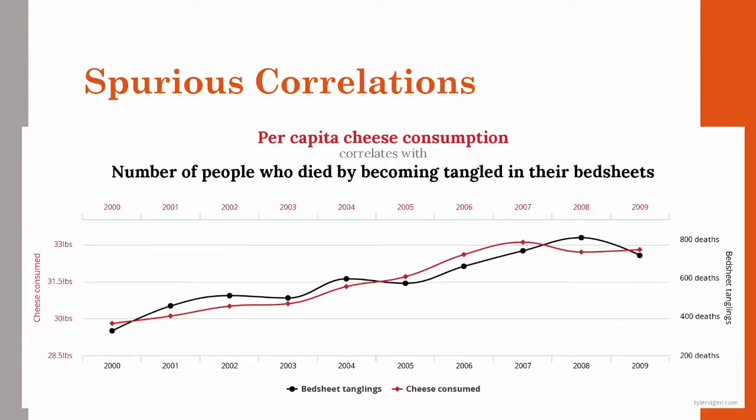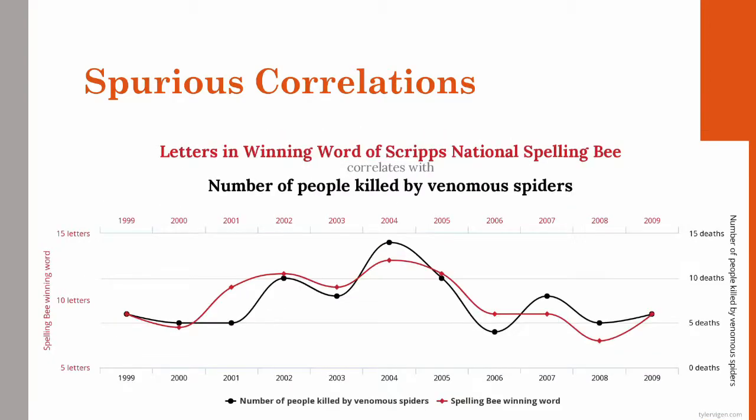There's a correlation between per capita cheese consumption and the number of people who died by becoming tangled in their bedsheets, and the number of letters in the winning word of the Scripps National Spelling Bee correlates with the number of people killed by venomous spiders. The point is that you can find a lot of these relationships, and even media outlets will frame them as cause-and-effect. But without proper experimental manipulation, you can't establish that.